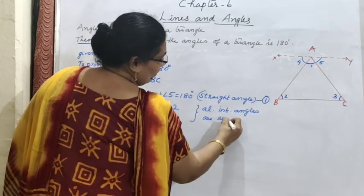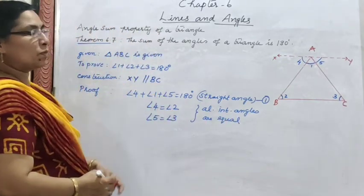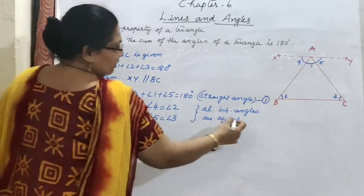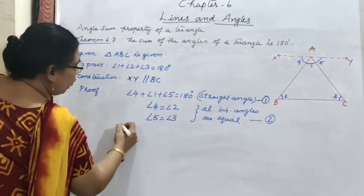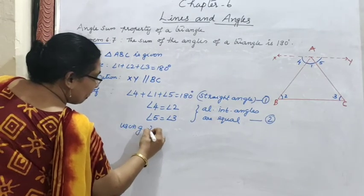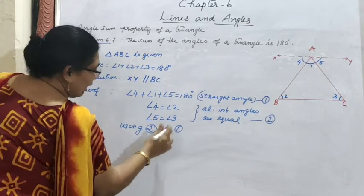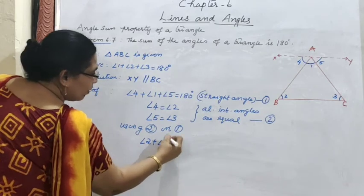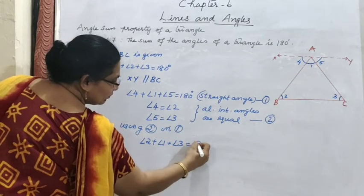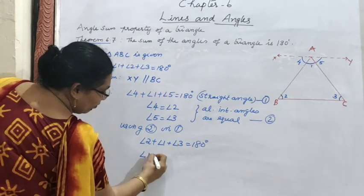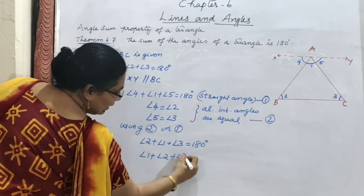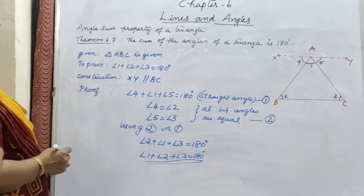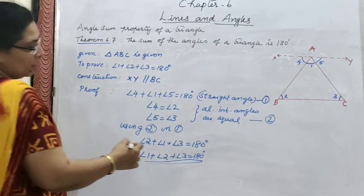Angle 4 equal to angle 2 and angle 5 equal to angle 3, both by alternate interior angles, because by construction XY is parallel to BC. Replacing in equation 1: angle 2 plus angle 1 plus angle 3 equal to 180°, that is angle 1 plus angle 2 plus angle 3 equal to 180°. Hence proved.